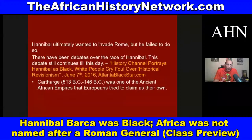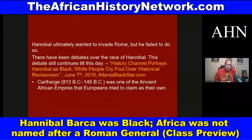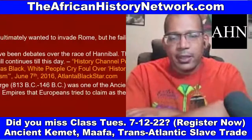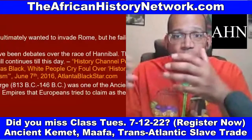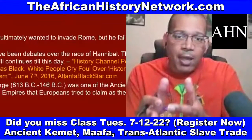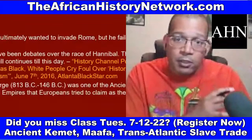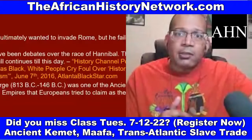Carthage was one of the ancient African empires that Europeans tried to claim as their own, but these were Black African people. In his book World's Great Men of Color, Volume One, history scholar J.A. Rogers — Joel Augustus Rogers — wrote that the Carthaginians were descendants of the Phoenicians, a negroid people, and that until the rise of the doctrine of white superiority, Hannibal Barca was traditionally known as a Black man.